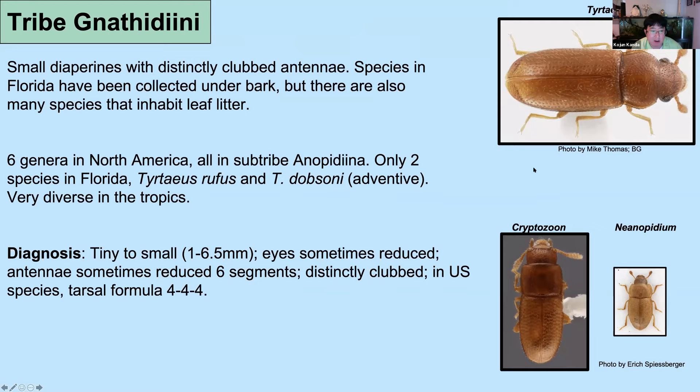The Nathidiini is a very cool group of Diaperinae — very tiny, one to six and a half millimeters — all with a really distinct antennal club. You can find them in leaf litter or under bark. The US doesn't have too many species: only two species of Terteus, one of which is likely adventive. If you go further south to Mexico and Central America you encounter more species — here's Cryptozone from the West Indies and Neonopidium from Mexico. They also have a reduced tarsal formula, so if going through obvious teneb characters you might overlook this one.